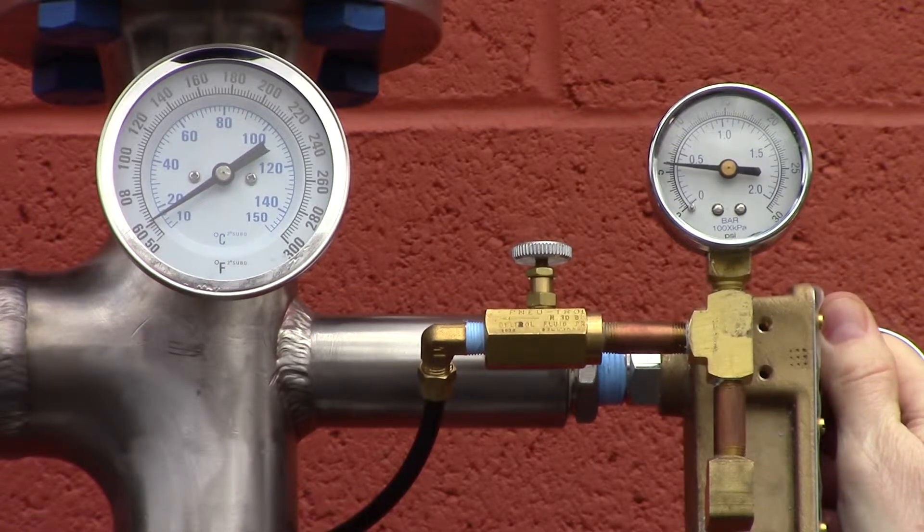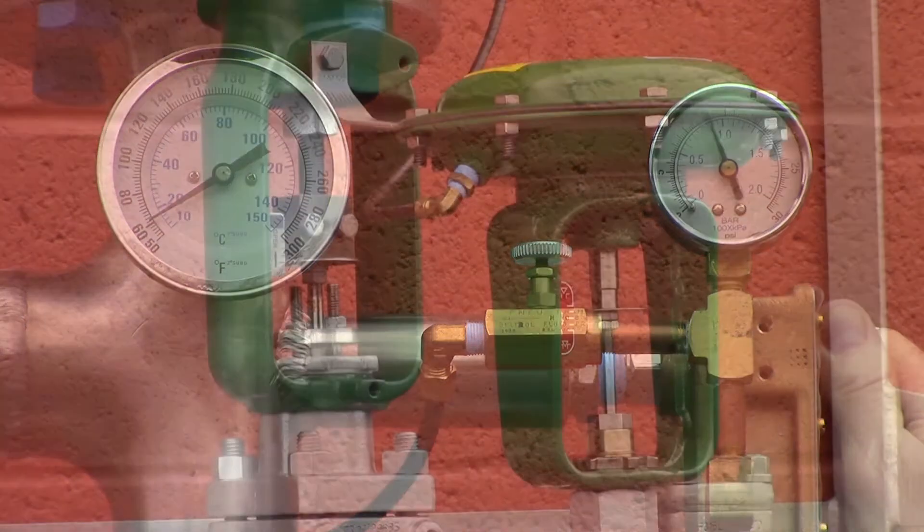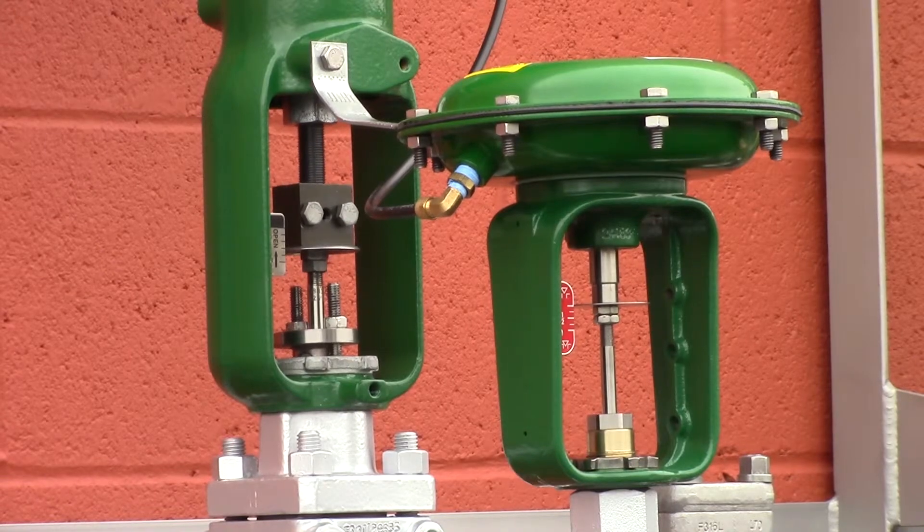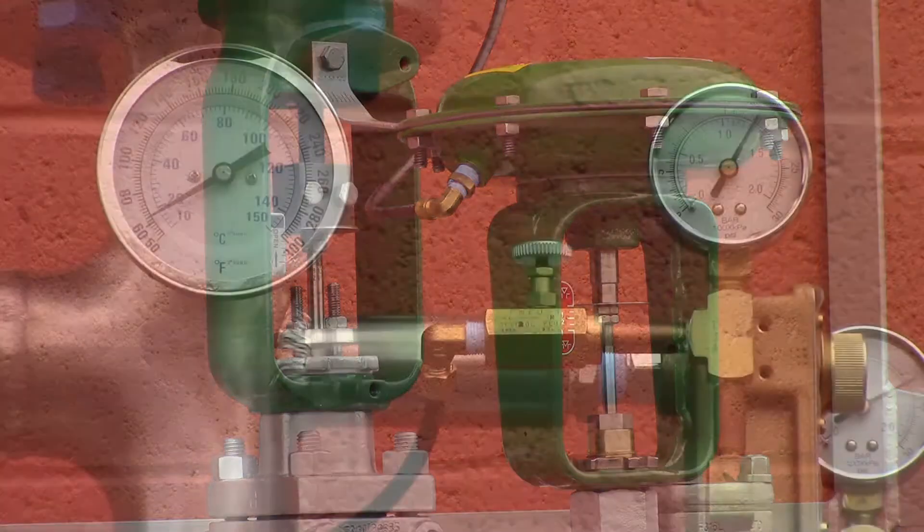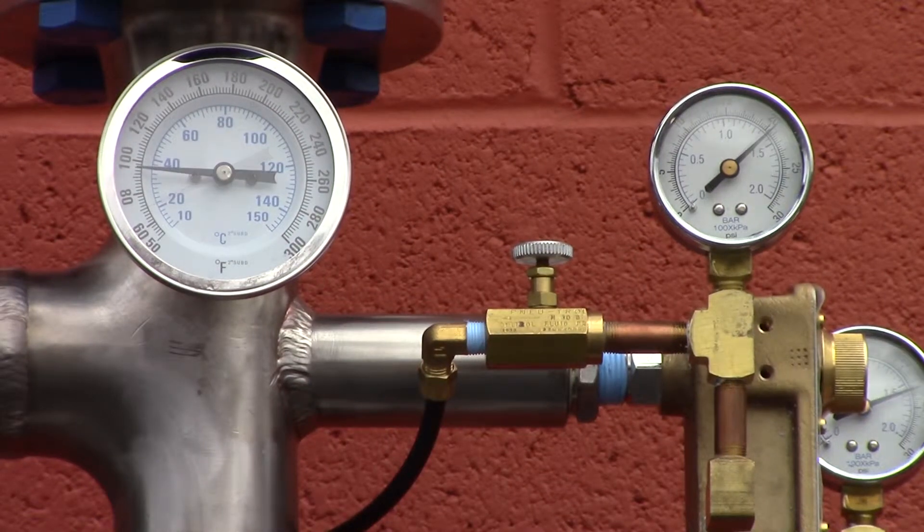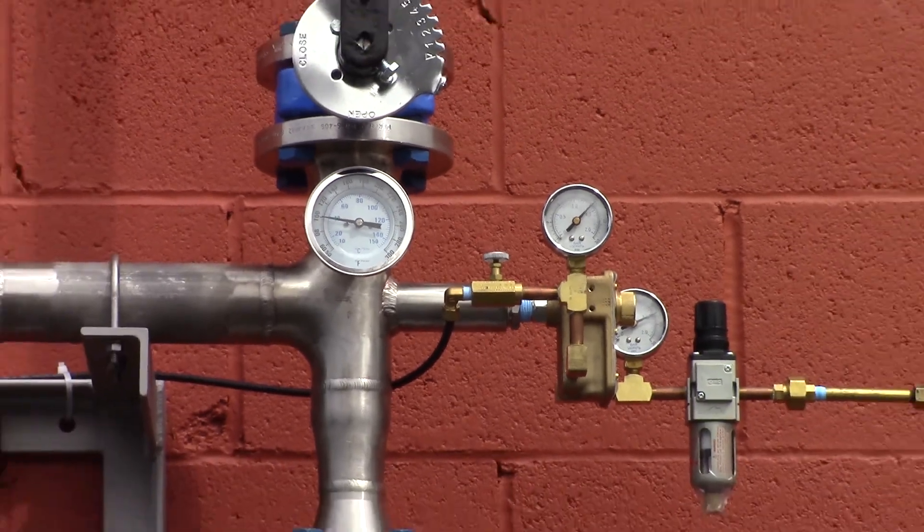The steam control valve or dual valves will open and begin injecting steam into the water. Allow the hot water temperature to stabilize at your desired temperature as observed on the dial thermometer. Readjust the knob as necessary.